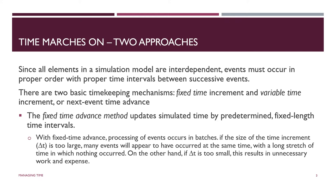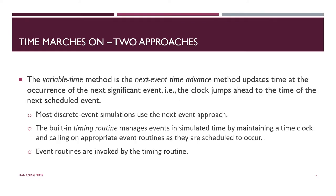Why don't we just look at the next thing that's supposed to happen? Because we know that events pre-schedule other events. Why don't we look for the next thing that's supposed to happen and just advance the simulation clock to that? And that's exactly what the next method, the variable time method, does.